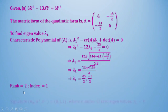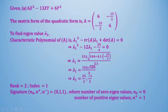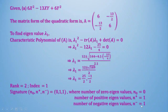Now let's check the signature of quadratic form A. The number of zero eigenvalues is 0, the number of positive eigenvalues is 1 (which is 25/2), and the number of negative eigenvalues is 1 (which is -1/2). So the signature is (0, 1, 1).